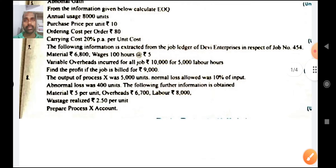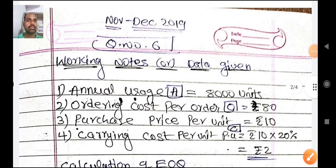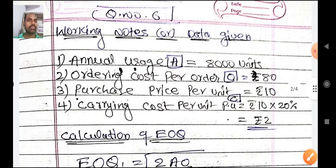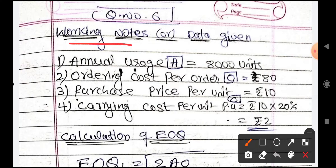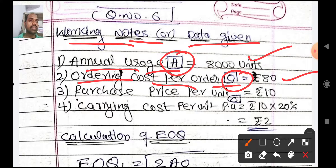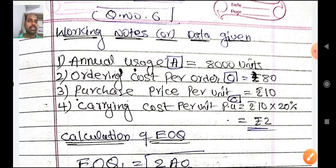So with this we can easily do the EOQ problem. This is question number 6, November-December 2019. The data given: annual usage A = 8000 units, ordering cost per order O = 80 rupees, purchase price per unit = rupees 10, carrying cost per unit per annum = 20 percent of purchase price, so C = 10 into 20 percent = 2 rupees. Calculation of EOQ.